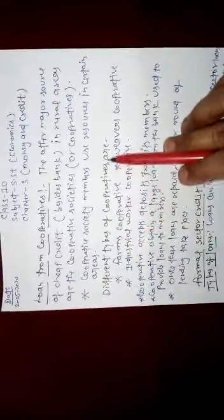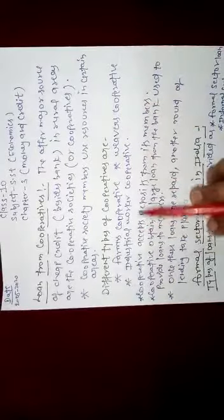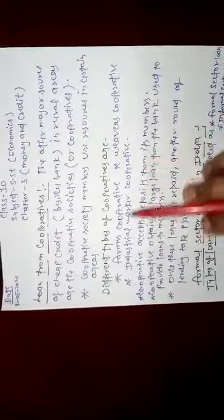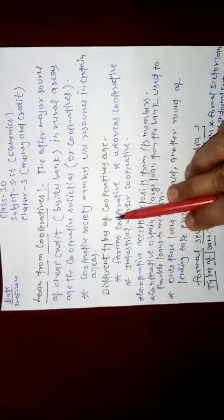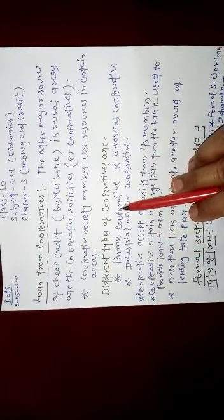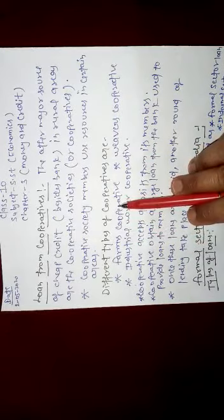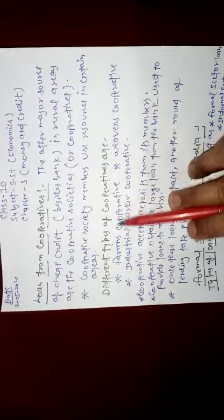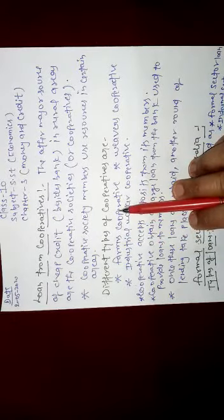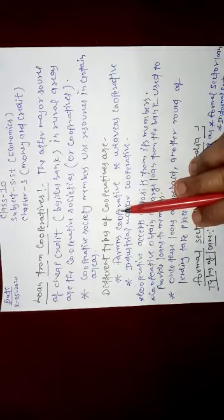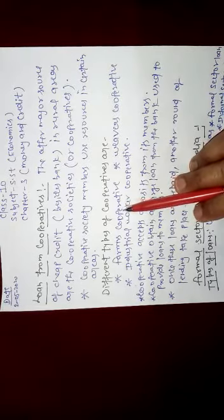Different types of cooperatives are: Farmers cooperative, Weavers cooperative, and Industrial worker cooperative. Farmers cooperative means a type of cooperative society that is helpful for the farmers for their seeds, fertilizers, irrigations, and all those things that are helpful for the farmers' growth and for their crop to be successfully completed.